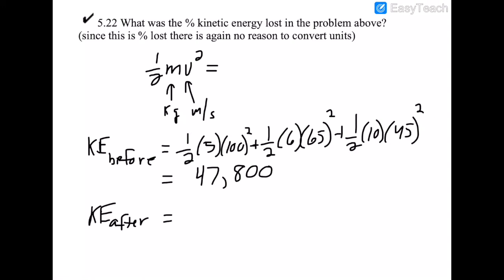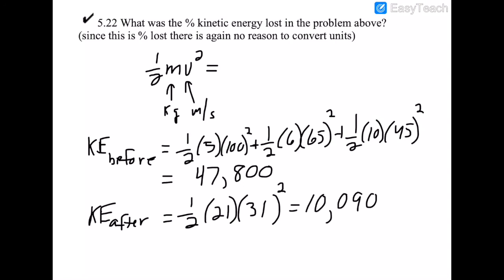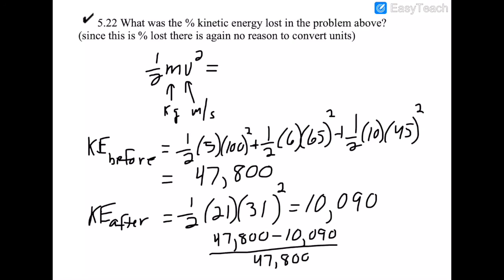Kinetic energy after: there is only one object now, so it's ½ × 21 tons × (31 mph)² = 10,090. The percent kinetic energy lost is (47,800 − 10,090) / 47,800 × 100.